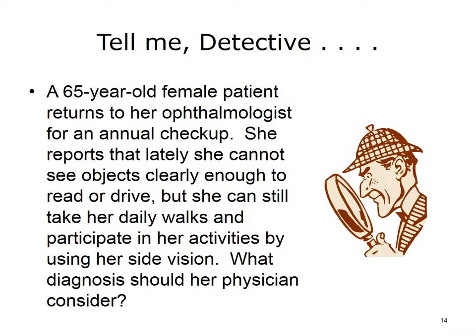In some cases, the disease advances so slowly that people do not notice a change in their vision. There are two types of macular degeneration. The dry form causes the slow gradual deterioration of the macula cells, and there is no known cure for this type. The wet type can often be treated with laser therapy in the early stages. Treatment can slow vision loss, but it cannot restore lost vision.